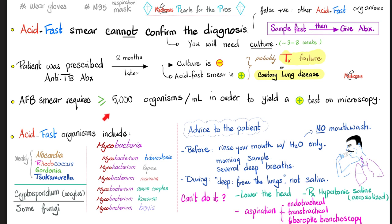How many bacteria do we need in order for the test to come back as a true positive? You need at least 5,000 organisms per milliliter. That's why there is a specific technique for it.